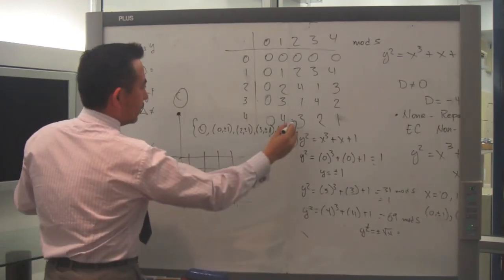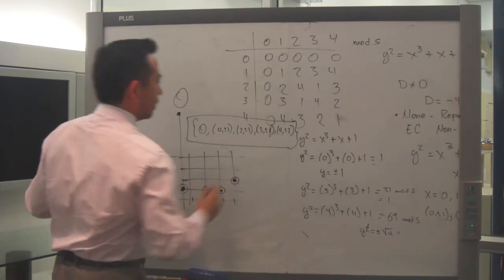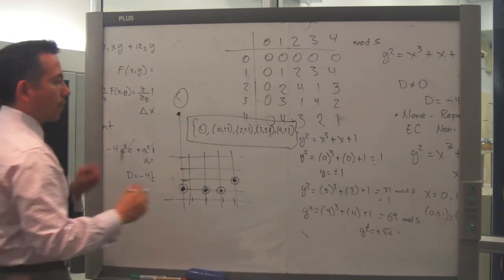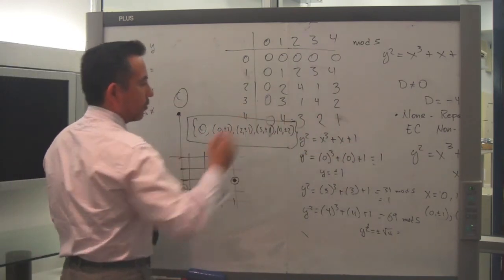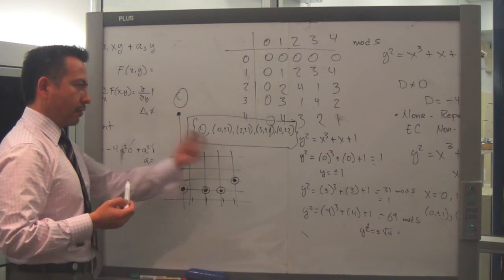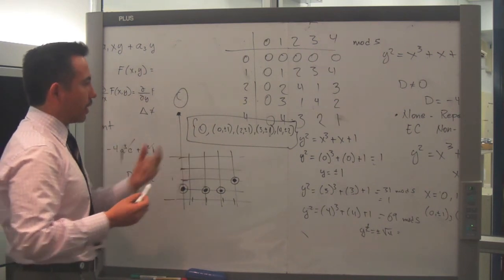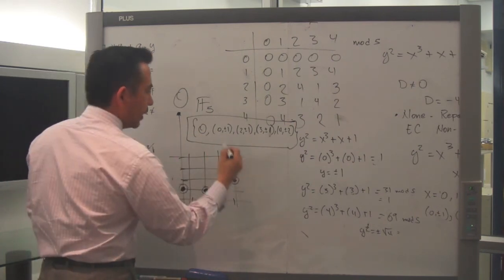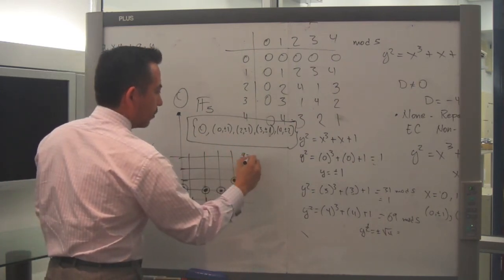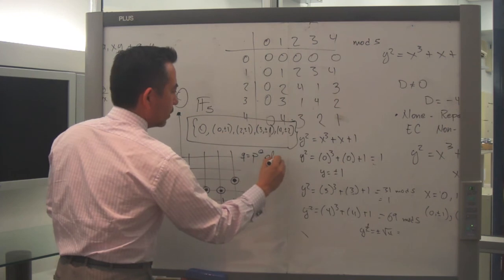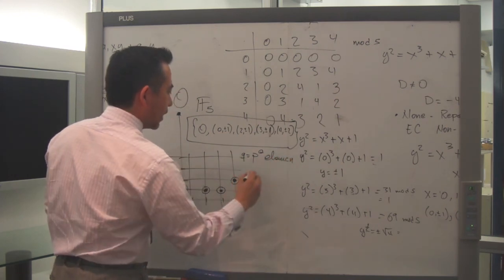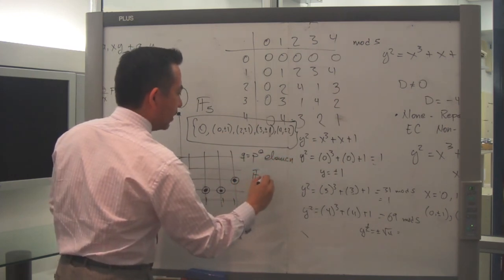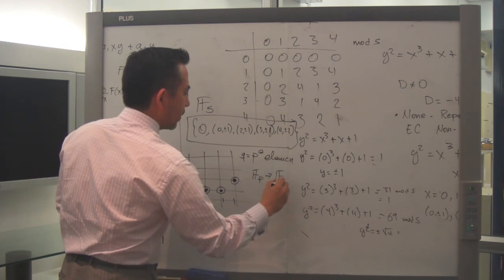This is the solutions for this cubic equation, for finite field, this is the finite field F5, right? Where we know it has q equal to p to the e elements, and we know that F of p is an extension of the finite field q, okay?